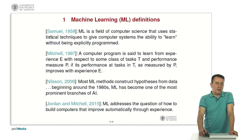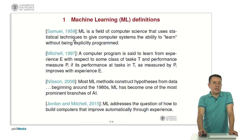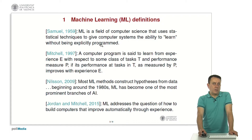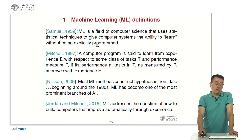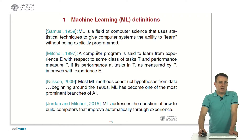The first definition is by Arthur Samuel, to whom is attributed one of the first machine learning systems — one for playing checkers. Arthur Samuel said: machine learning is a field of computer science that uses statistical techniques to give computer systems the ability to learn without being explicitly programmed. Here, data is identified as a key difference for machine learning and building intelligent systems.